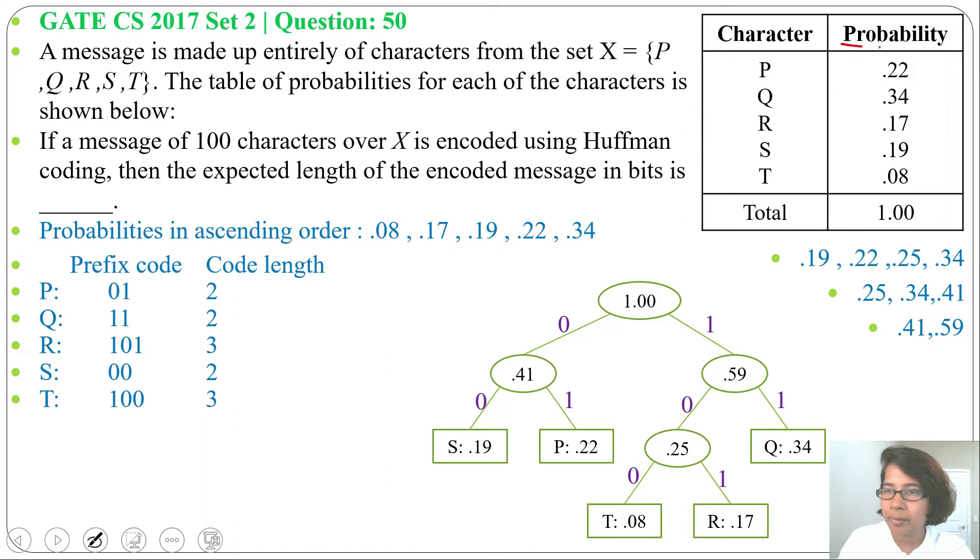Here, just probabilities are given, not the exact frequency. We will find the average length for each character. But here it is asking for the encoded message in bits, meaning it is asking for the total number of bits. So what you can do, after finding the average length for each character, we can multiply with 100. That is one way. Another way,